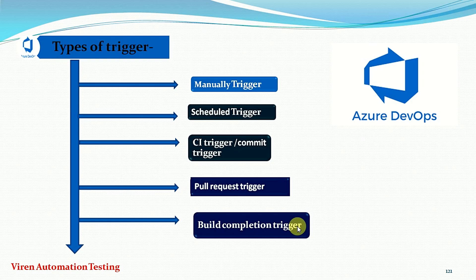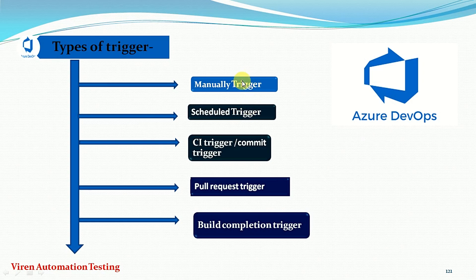The final trigger type is the build completion trigger. This fires when a build is completed, so you can schedule actions to happen once your build finishes. These are the five types of triggers available in the Azure DevOps CI/CD pipeline, and they are applicable for both release pipelines and build pipelines. So with two pipeline types, we will understand around ten types of triggers, and also how to configure them through the classic editor and in YAML files — around twenty scenarios in this video series.